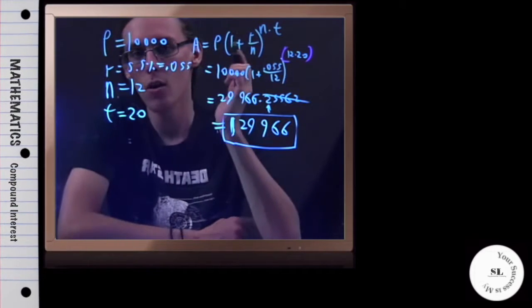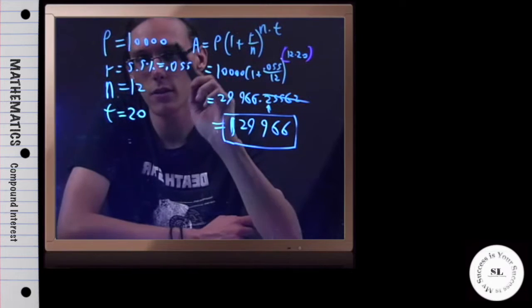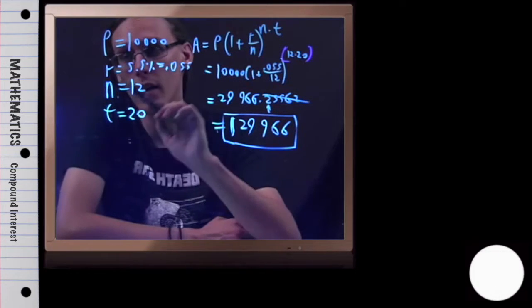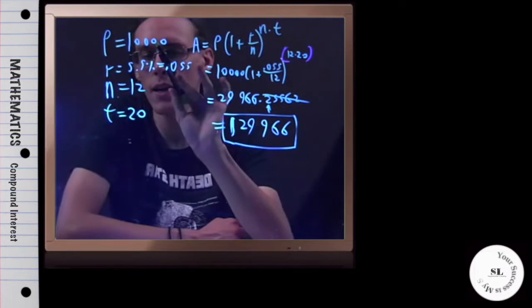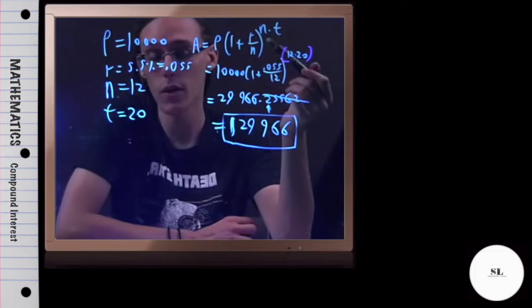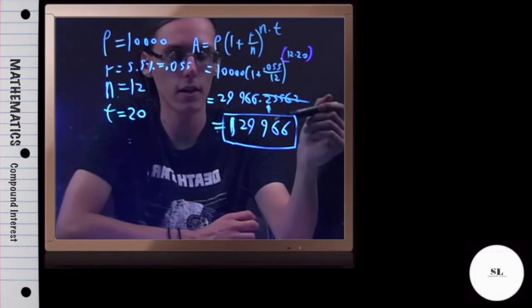Alright, now in this example, we're given that we received an inheritance of $10,000 and we invested it in an account that has a 5.5% interest rate, which is compounded monthly, and we left it there for 20 years. At the end of that 20 years, we should have $29,966.